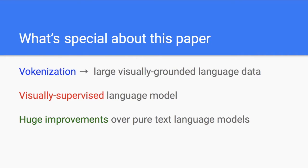That's actually a pretty innovative way to do things. And more importantly, if you train the visually supervised language model in this way, then you will have a very significant improvement over the language model that is trained with pure text. One thing that really interests me is that you basically only use a very similar model architecture without changing too much.